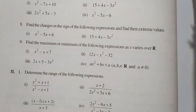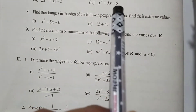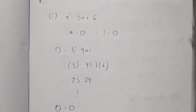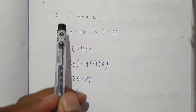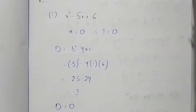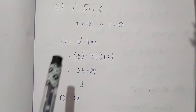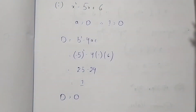In this video we will solve the eighth question: find the change in the sign of the following expression and the extreme value of these two equations. The first equation is x² - 5x + 6 = 0. From this, the value of a is 1, which is greater than 0. The coefficient of x² is a, and the discriminant b² - 4ac is 1, which is also greater than 0.